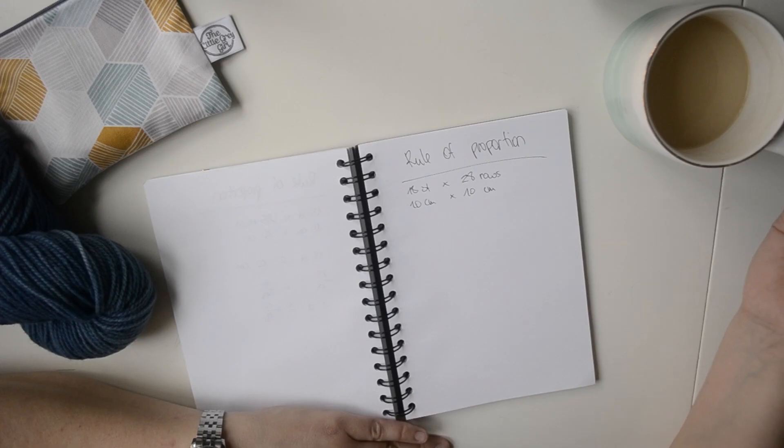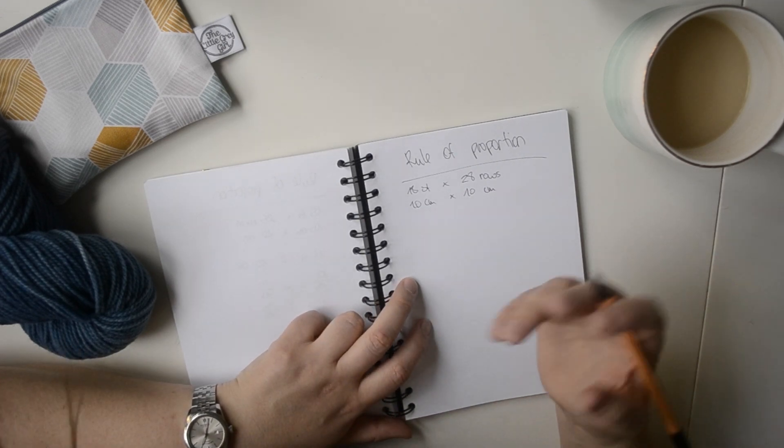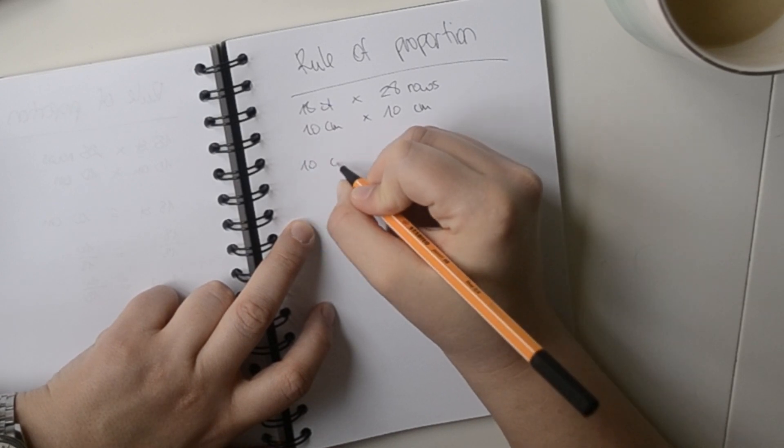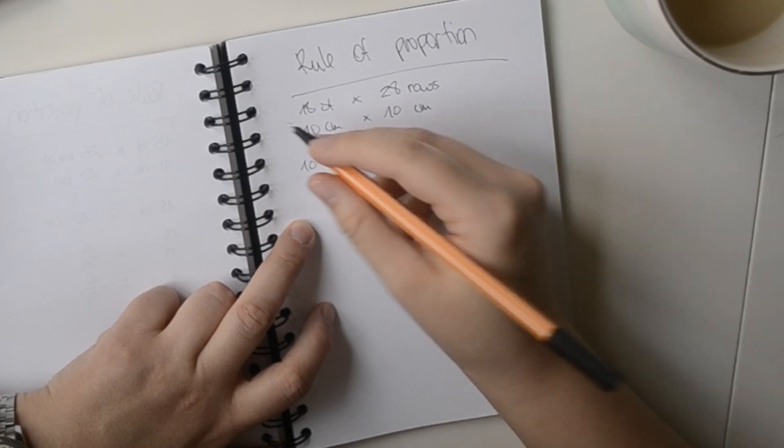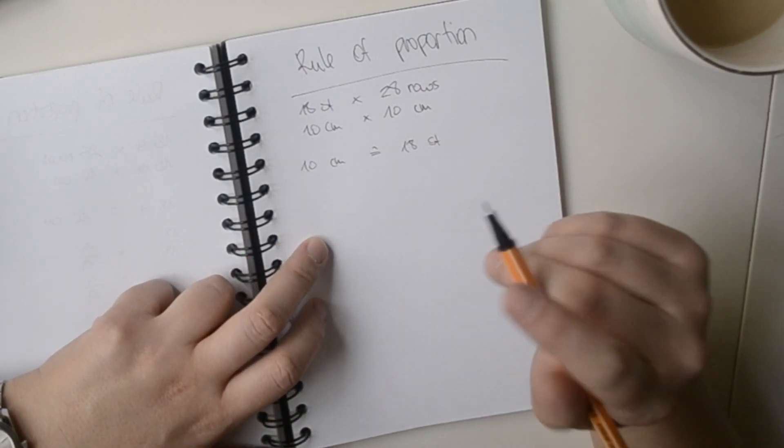An example for when you can use the rule of proportion is when you would want to knit, for example, a piece that is 30 cm broad and you wanted to know how many stitches do you want to cast on. You start with something that you already know. So you know that when you have 10 cm, that's equal to 18 stitches because that is what you measured in your swatch.